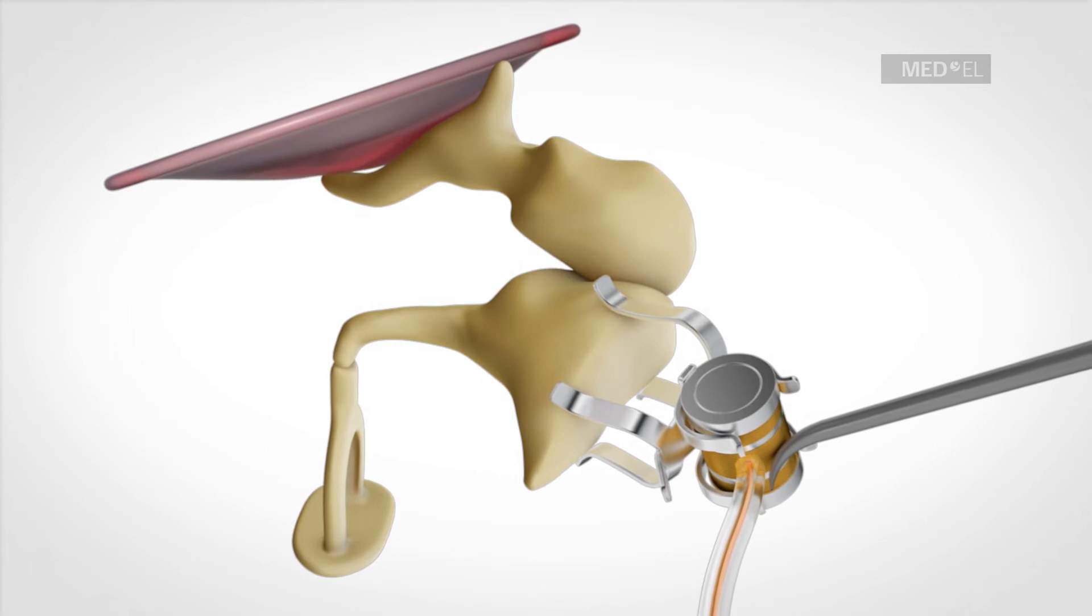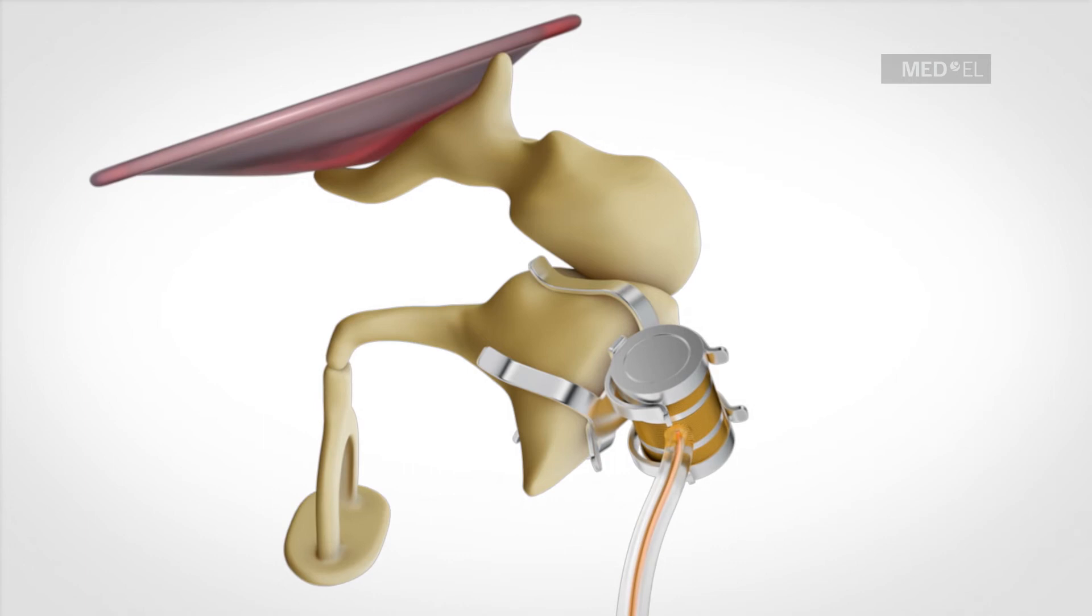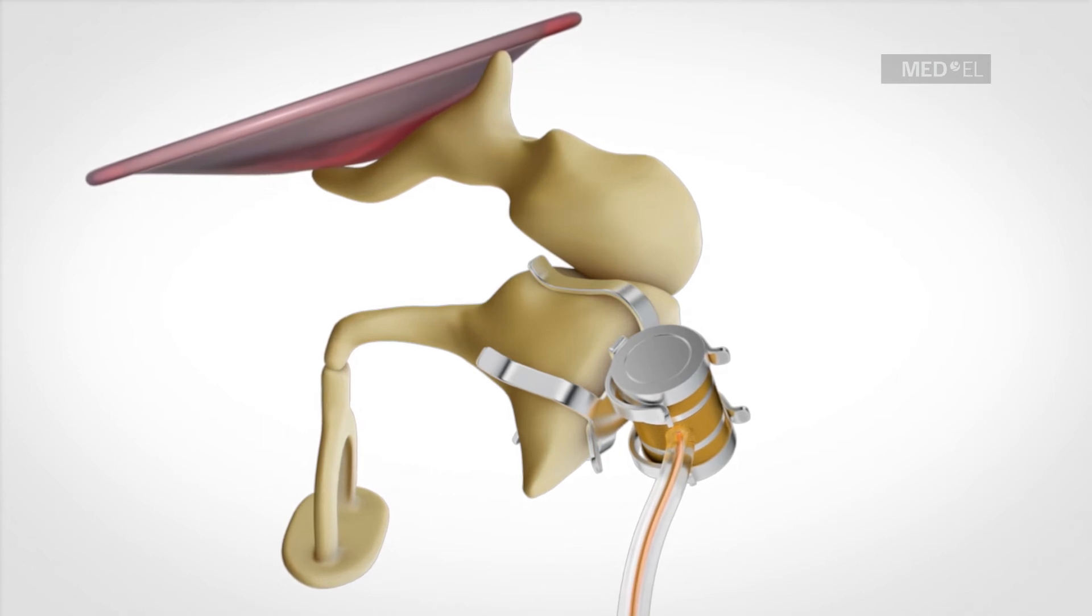The longer legs sit over the body of the INCUS and the shorter legs over the short process of the INCUS. Crimping is not needed and with this coupler there are fewer surgical steps.